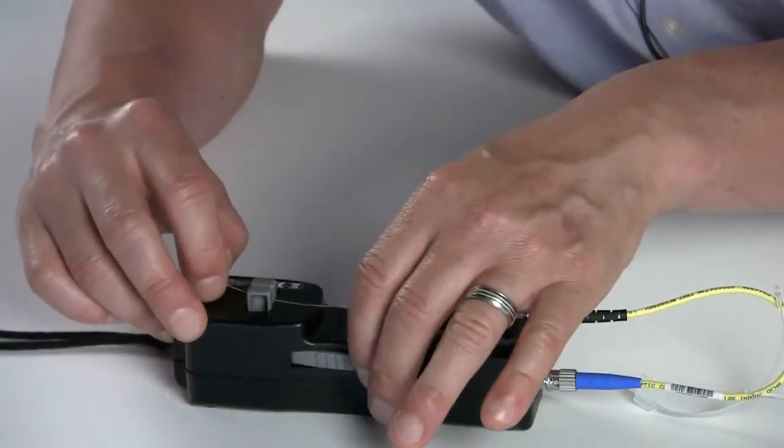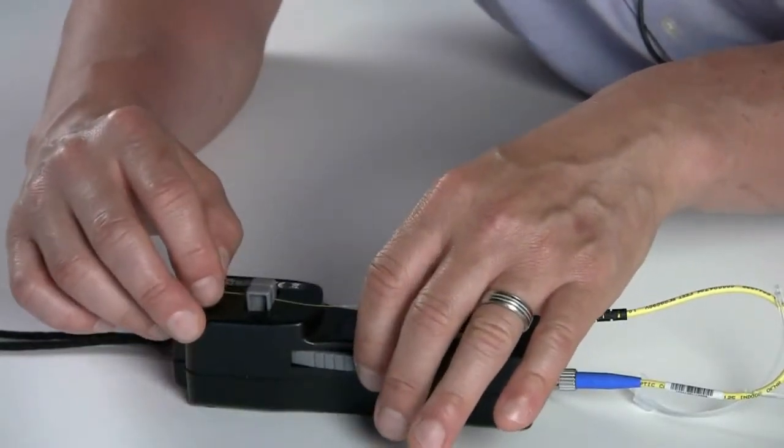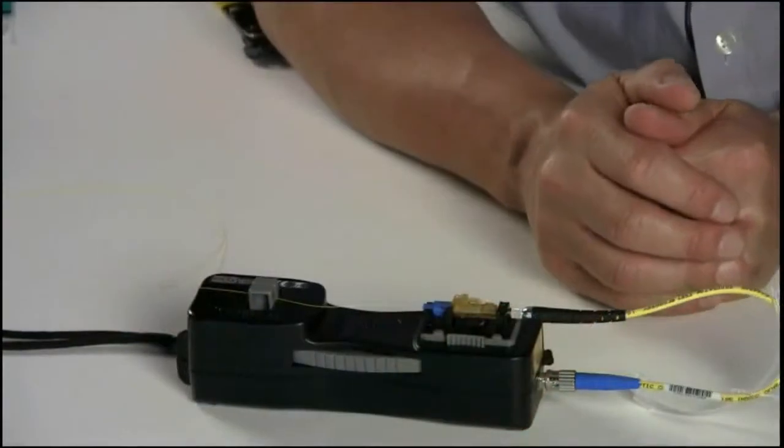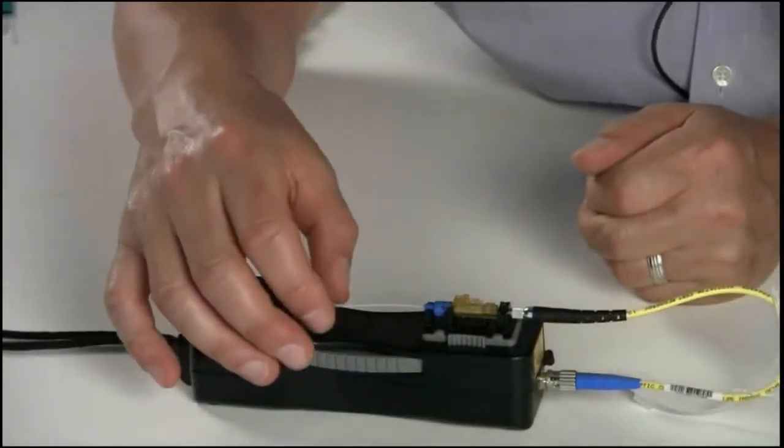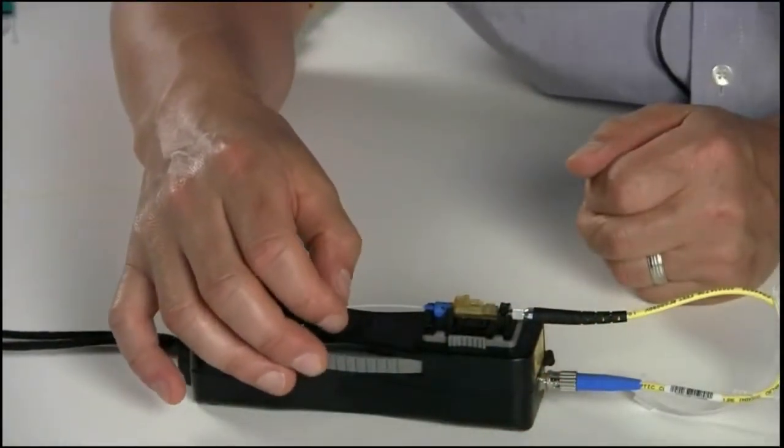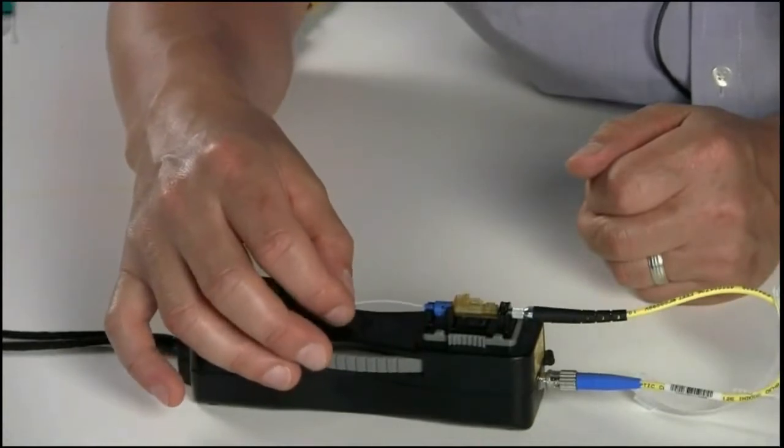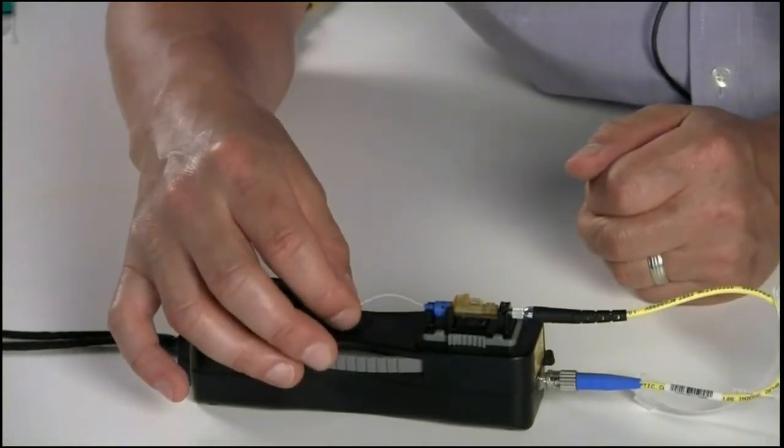Secure the fiber into the buffer clamps. After locking down the fiber, hold the fiber at the edge of the buildup tube and apply slight forward pressure towards the connector.